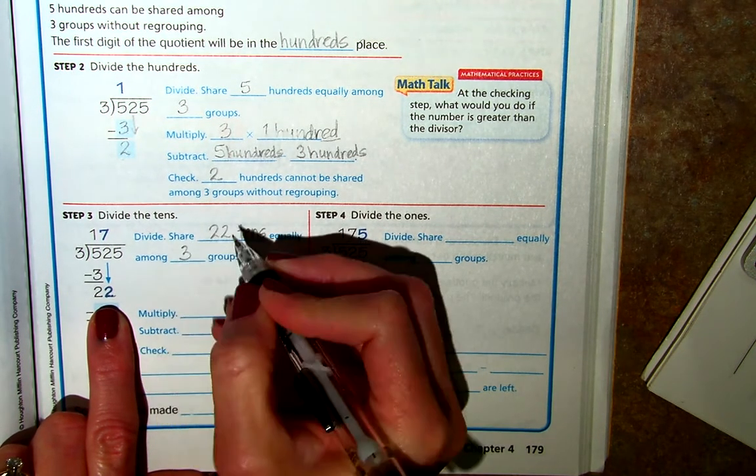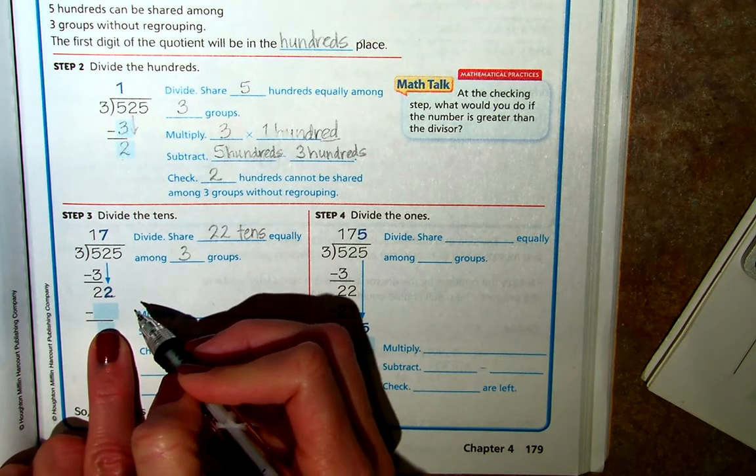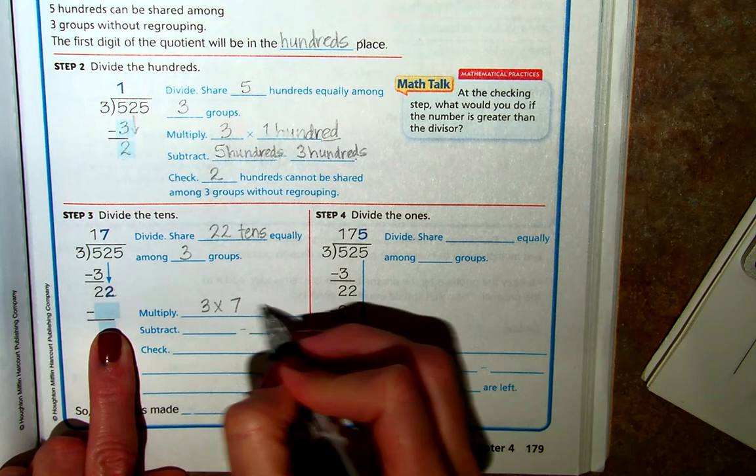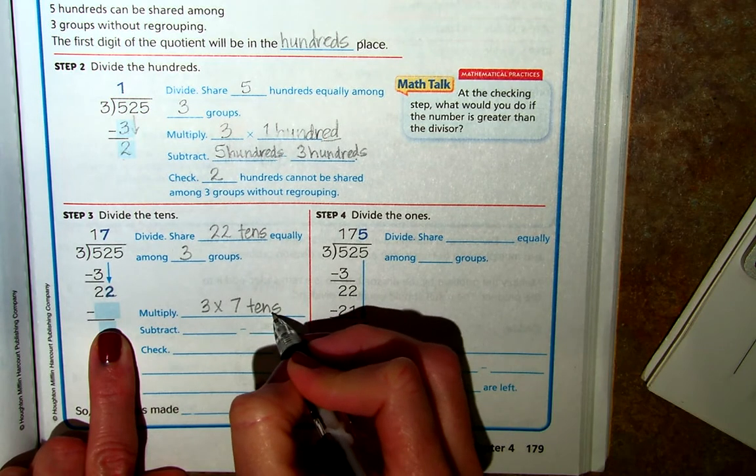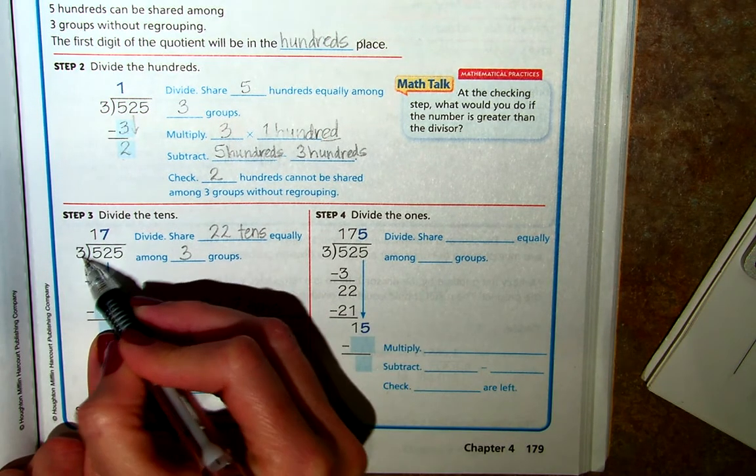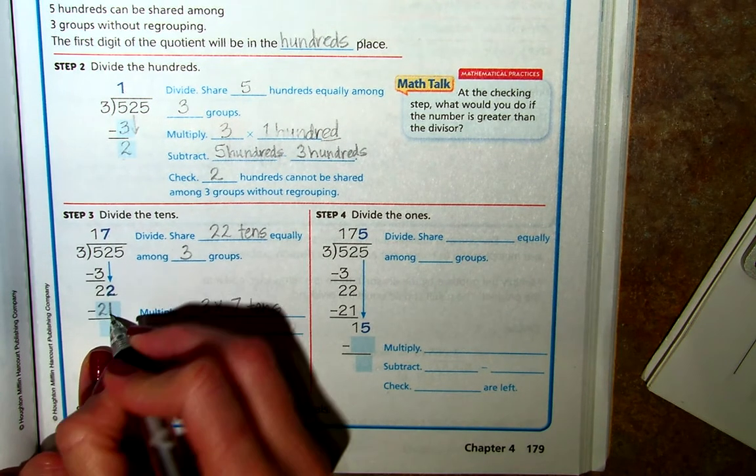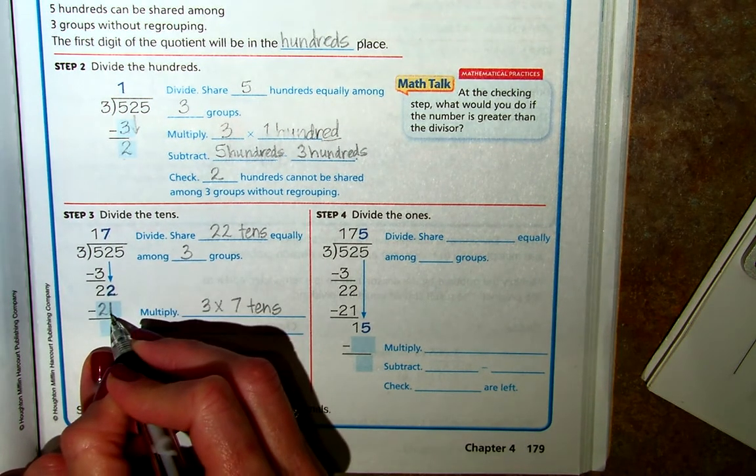And so we can share 22 tens equally among 3 groups. And we can do that by multiplying 3 times 7 tens. And 3 times 7 tens is going to give us 21 tens there.